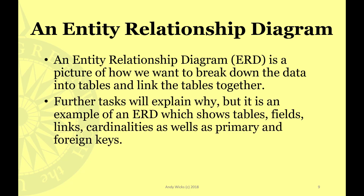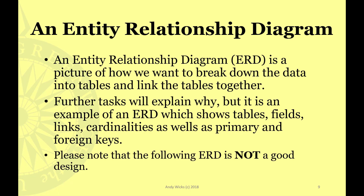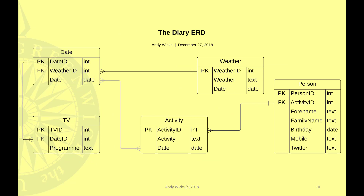Further tasks will explain more, but here is an example of an entity relationship diagram, which shows tables, fields, links, cardinalities, as well as primary and foreign keys. Please note that the following ERD is not a good design. We have a date table with a one-to-many link to TV — on one date we can watch many TV programs. We've got the one-to-many link between date and weather, date and activity in a many-to-many relationship, and finally person linked to activity — which people did we see when we were doing these activities?